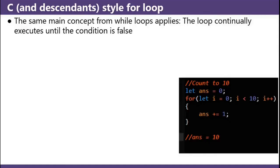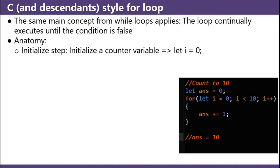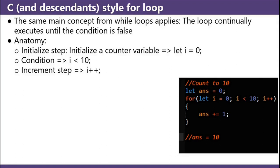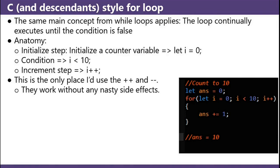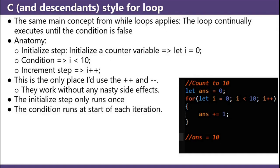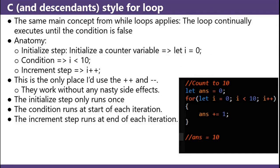C and descendant style for loop: the same main concept from while loops applies — the loop continually executes until the condition is false. Anatomy: initialize step — initialize a counter variable like let i equals 0; condition — in this example, i less than 10; increment step — i plus plus. This is the only place I'd use the plus plus and minus minus, as they have hardly any way of messing up in this case. The initialize step only runs once. The condition runs at the start of each iteration. The increment step runs at the end of each iteration, so at the end of each iteration it adds one to i.